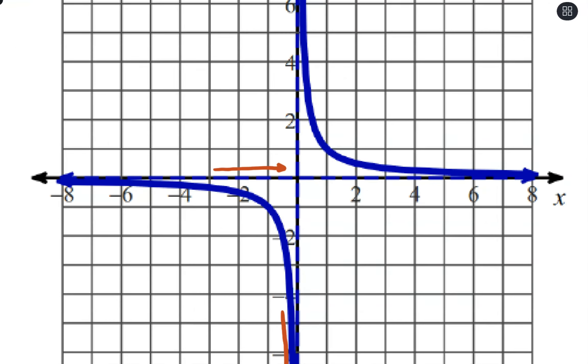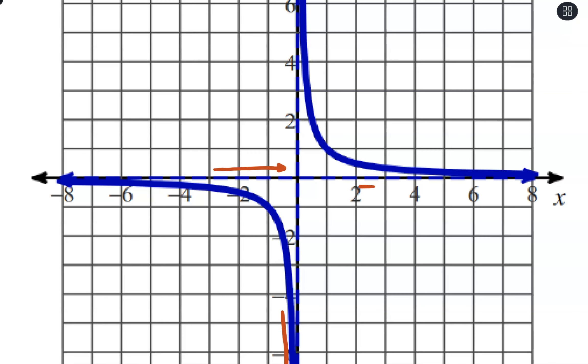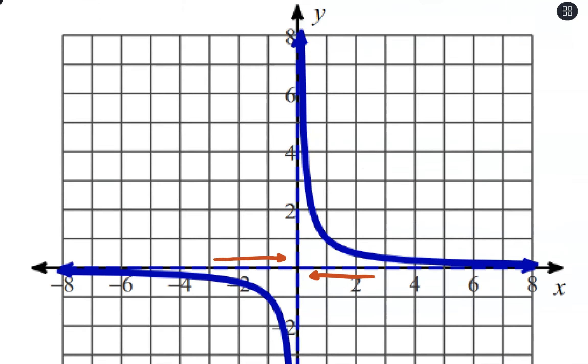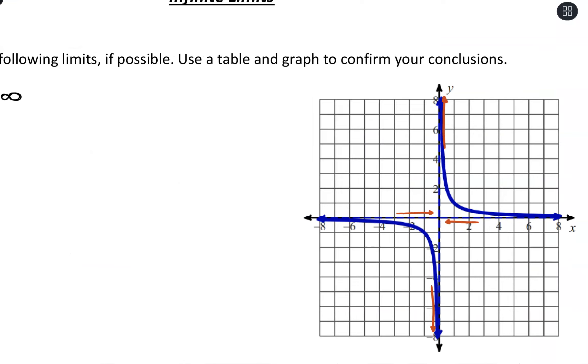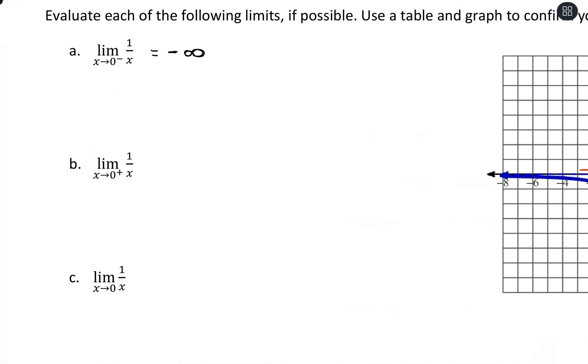Approaching from the right-hand side, we're going to see a similar result, where if I'm walking along the function, we're going up and up and up forever. If we made a table of values, as we chose small values close to 0, but just a little bit larger, our y values would be infinitely large. So our limit as x approaches 0 from the right is going to be positive infinity.